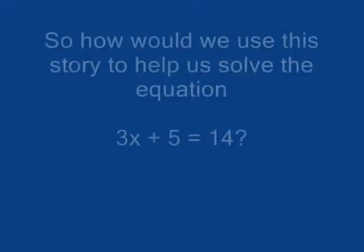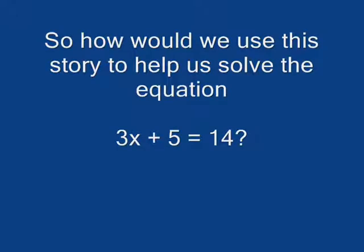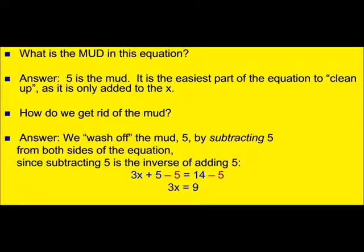So, how would we use this story to help us solve the equation 3x plus 5 equals 14? What's the mud in this equation? 5 is the mud. Why is it the mud? Because it's the easiest part of the equation to clean up. Because it's only added to the x. You learned addition and subtraction before multiplication and division. It's easier to do. And how do we get rid of it? We wash off the mud by subtracting 5 from both sides of the equation. Because subtracting 5 is the opposite of addition.